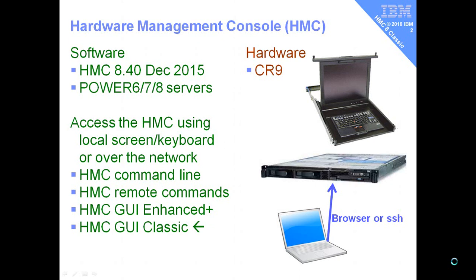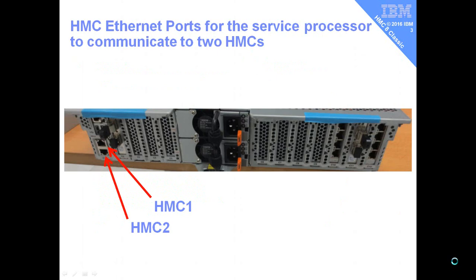There's a graphical user interface called Enhanced Plus - I've got other movies that go through that; it looks nice but is a little bit slower. In this set of movies, we'll be looking at the classic graphical user interface, which the old guys have been using for many years and is a bit quicker. If you look around the back of any regular Power 8 box from IBM, you'll find two ports labelled HMC1 and HMC2. You're normally connected to two machines for redundancy. These are connected to the service processor, which handles reliability, availability, and serviceability tasks, and also does the initial firmware and hardware check when you boot up.